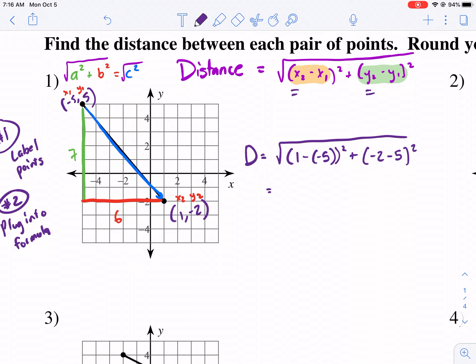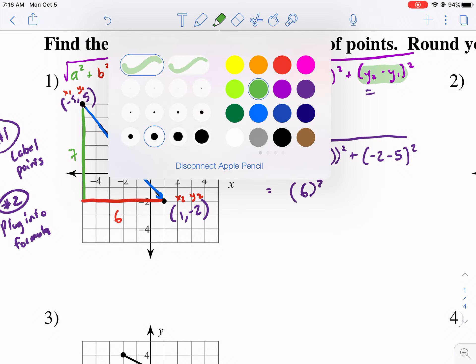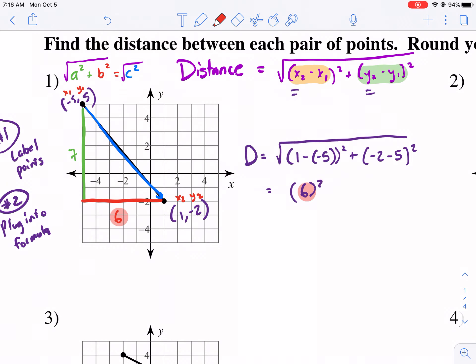Proceed. 1 minus a negative 5 is 1 plus 5. So that's 6 squared. What do you know? 6, 6. Is that a coincidence? It's not. Plus negative 2 minus 5. That's negative 7. 7. Where'd that 7 come from? It's not a coincidence. Spoiler alert. So we square that.